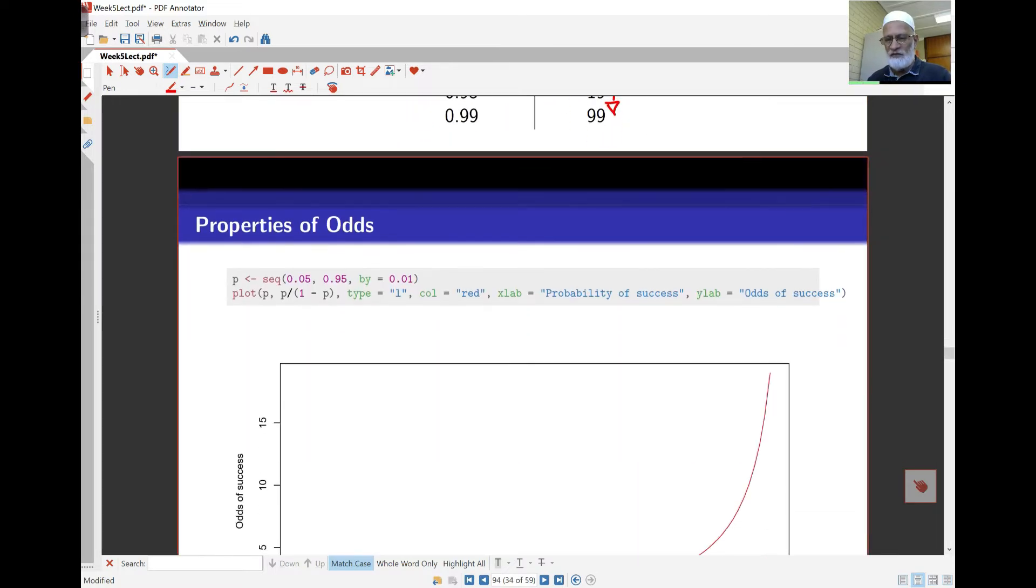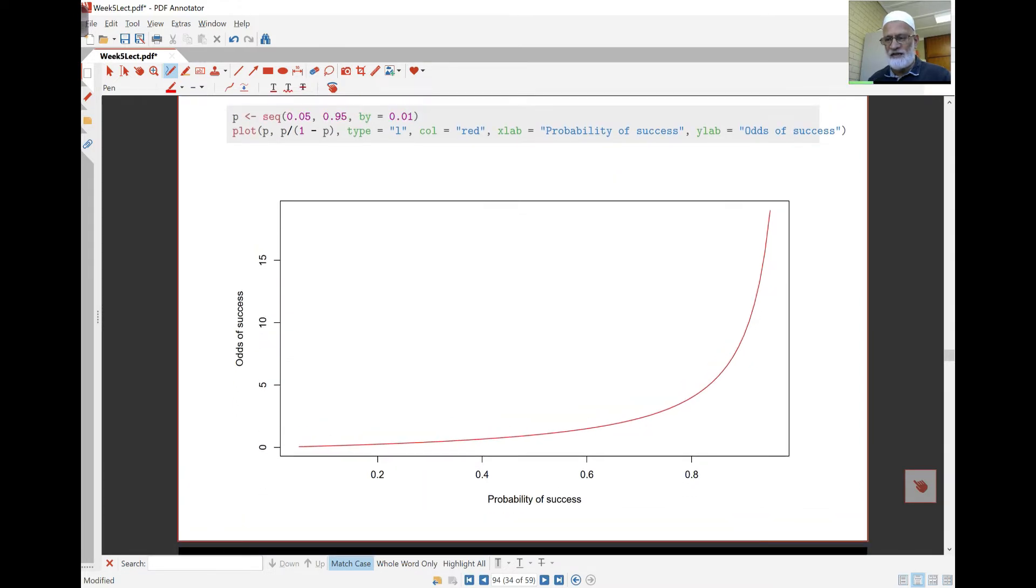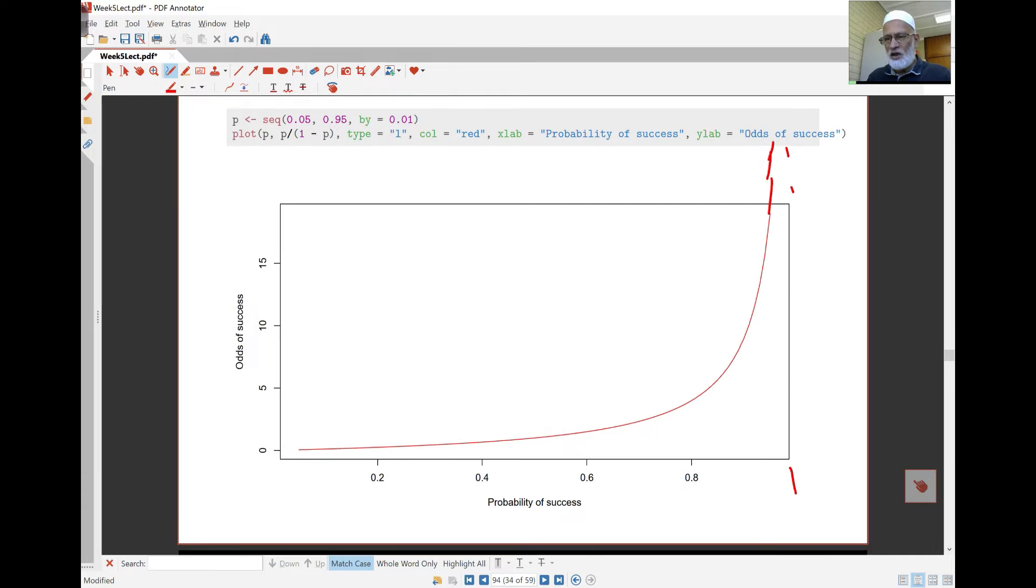So a graph here of the odds with respect to probability of success is, as you go towards 1 over here, then 1 here is a vertical asymptote. This is going to go higher and higher and higher. The probability of success lies between 0 and 1, but the odds lies between 0 and keeps going forever, the whole real line.